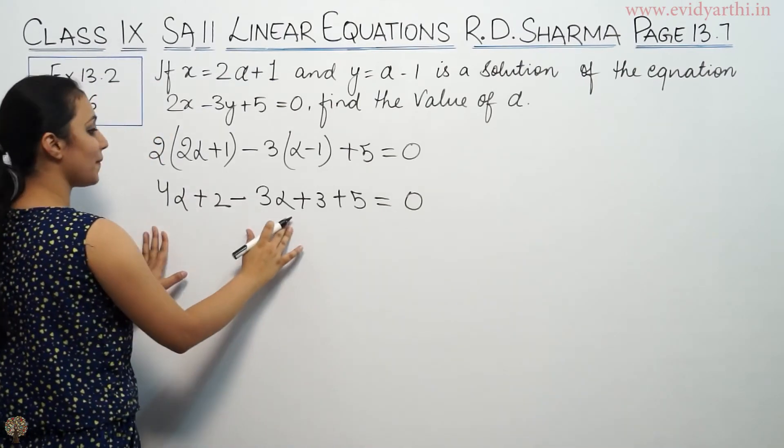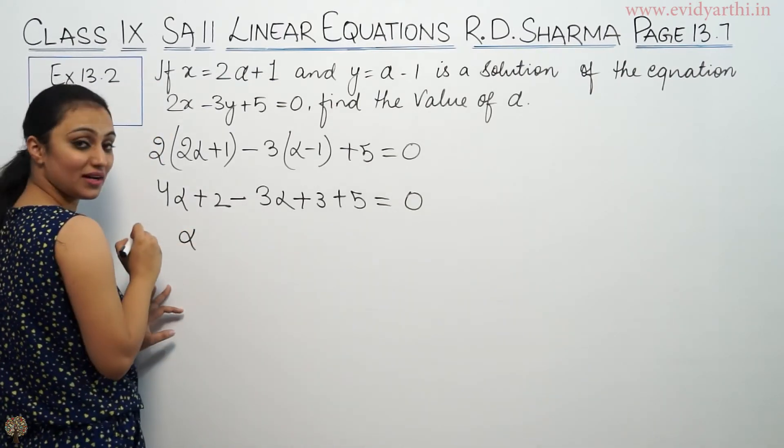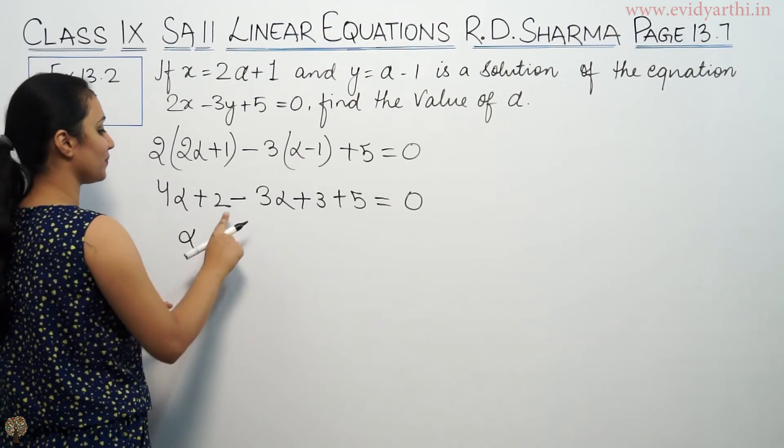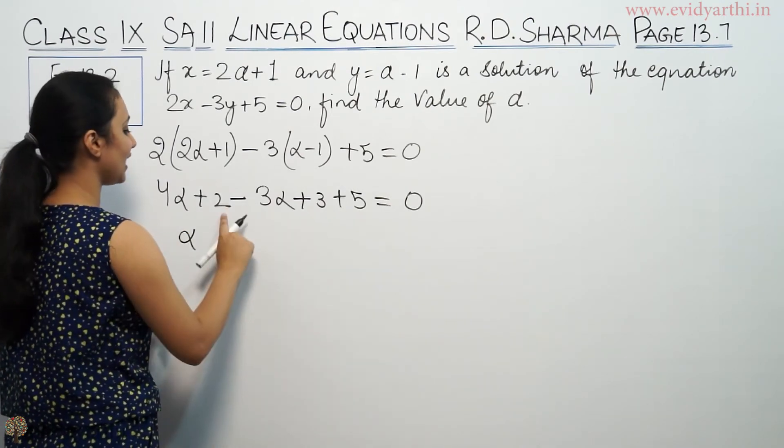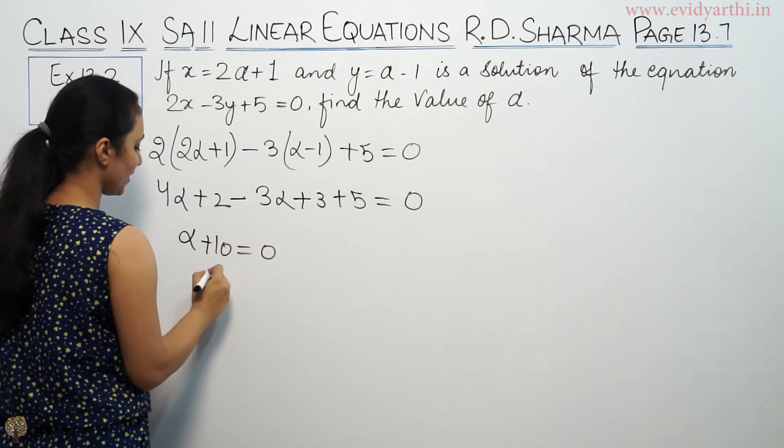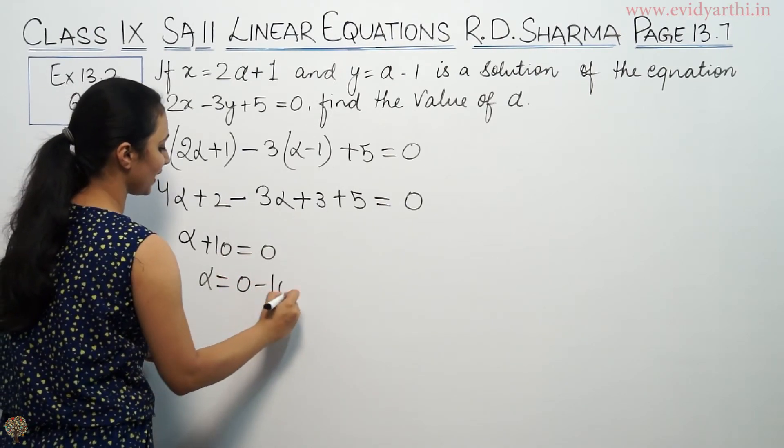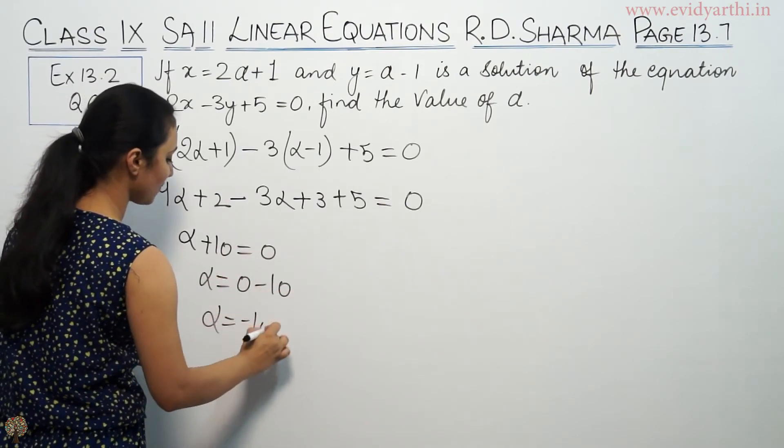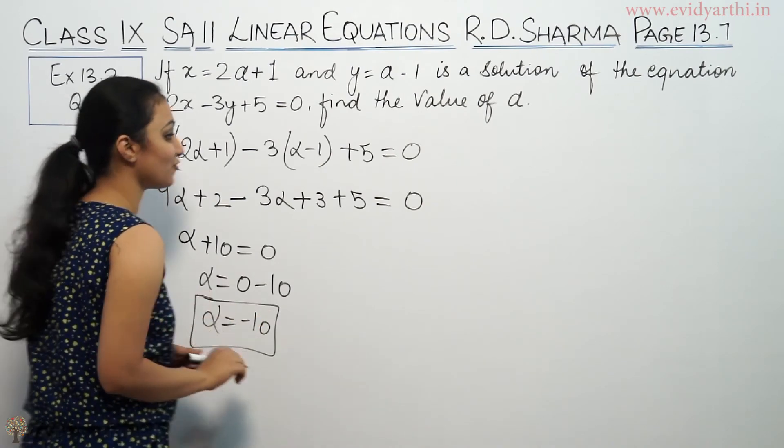So alpha is equal to 0 minus 10. So alpha is minus 10. This is the value for alpha.